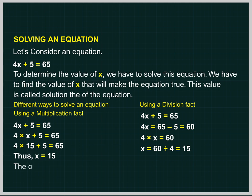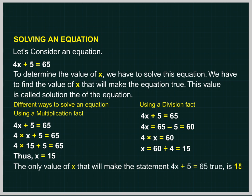The only value of x that will make the statement 4x plus 5 equal to 65 true is 15. Thus, the solution of the equation 4x plus 5 equal to 65 is x equal to 15.